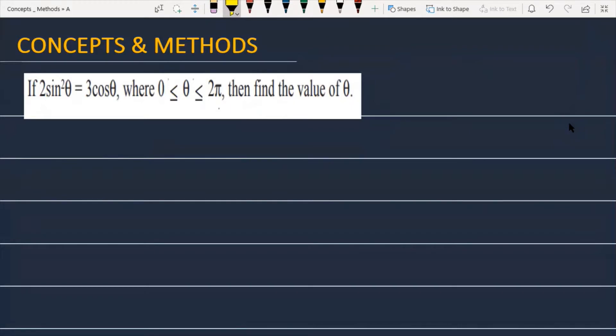If 2sin²θ equals 3cosθ where θ is greater than or equal to 0 but less than or equal to 2π, then find the value of θ.